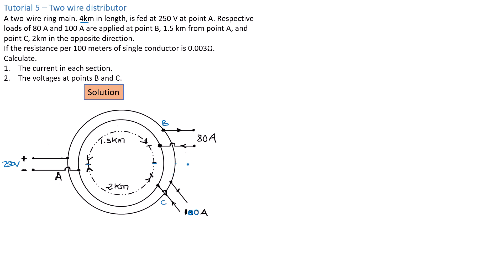The first question is to calculate the current in each section. Let's assume that the current we denote as x is flowing from A toward B. So this is x, our current. At point B we have 80 amps load, so from point B onward we're going to have the current x minus 80 amps.